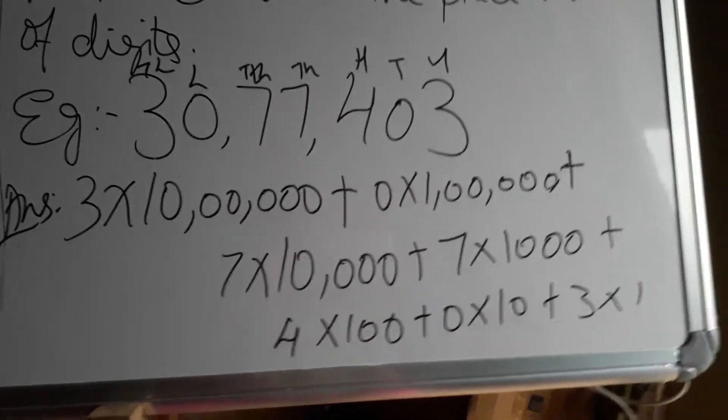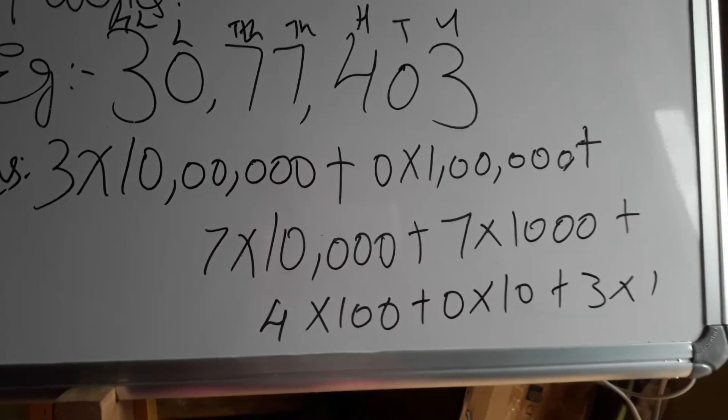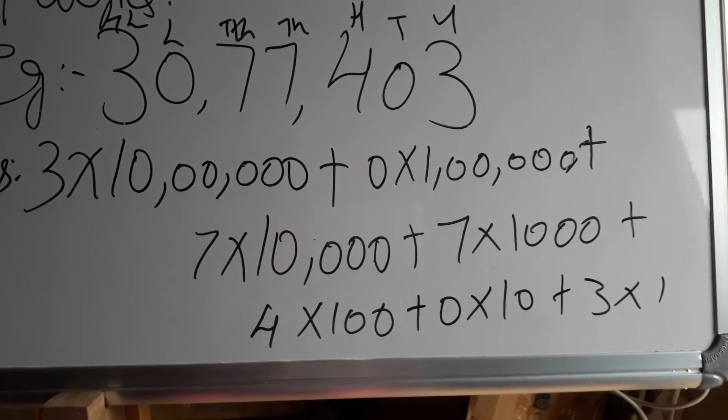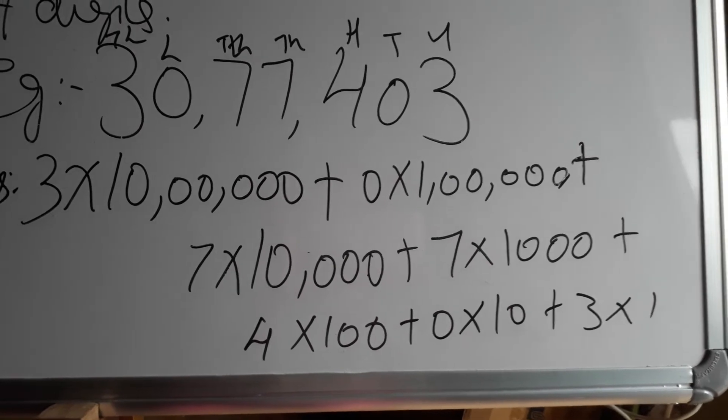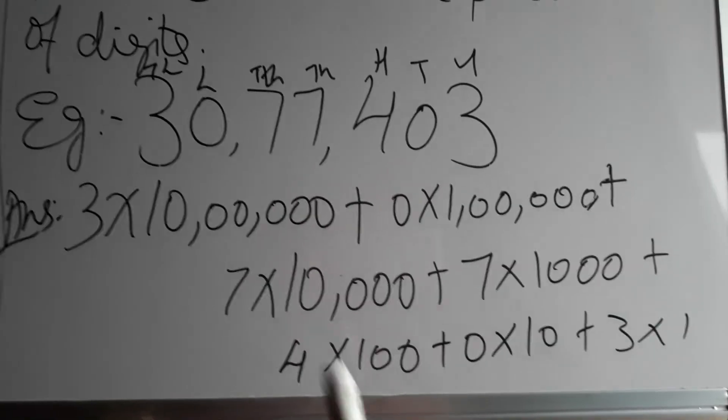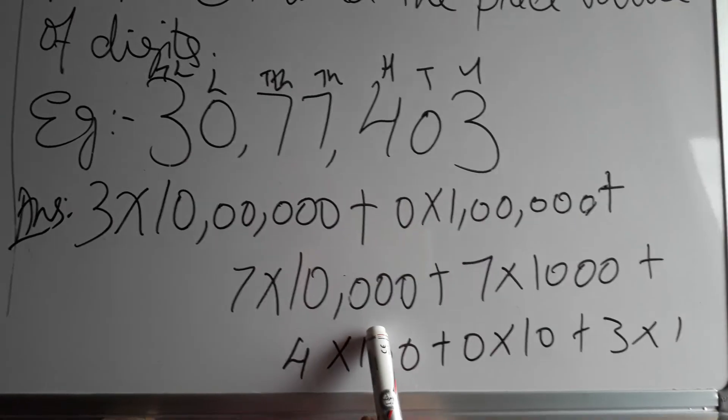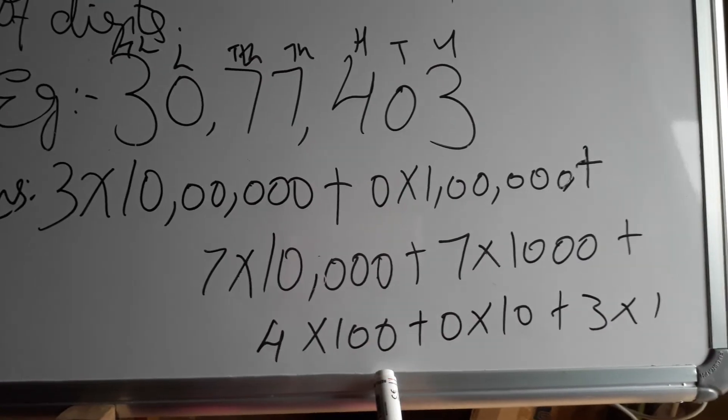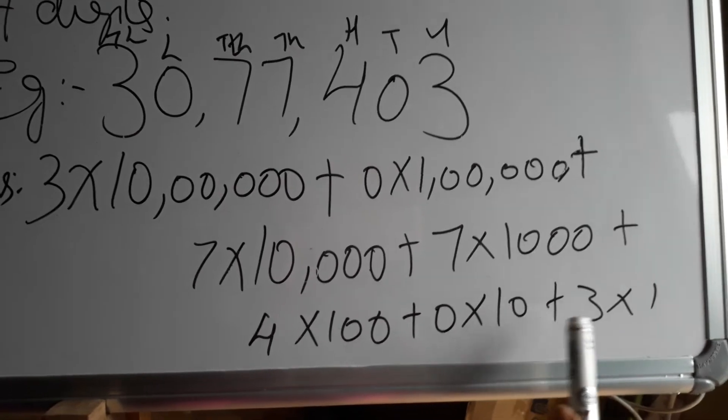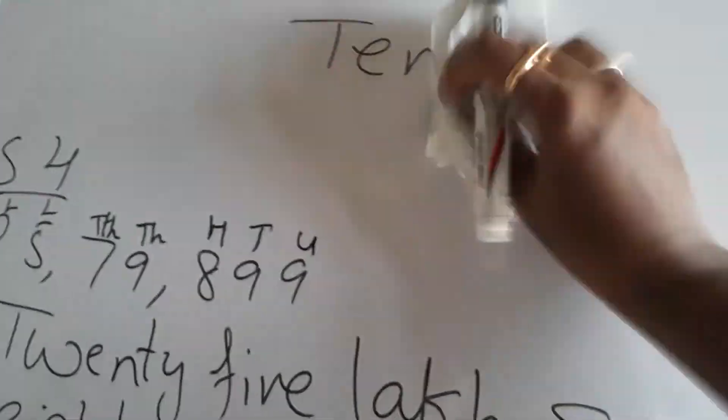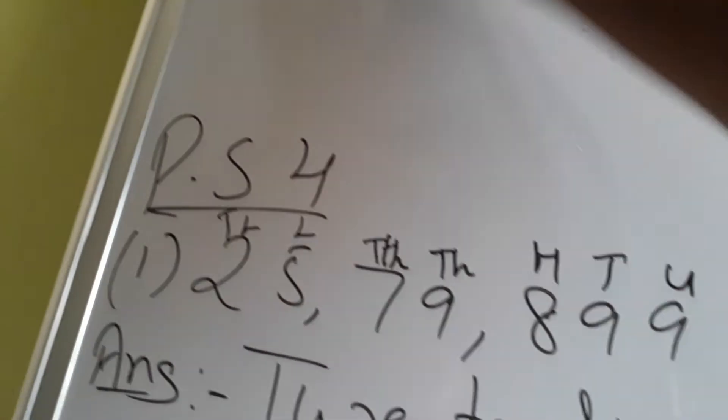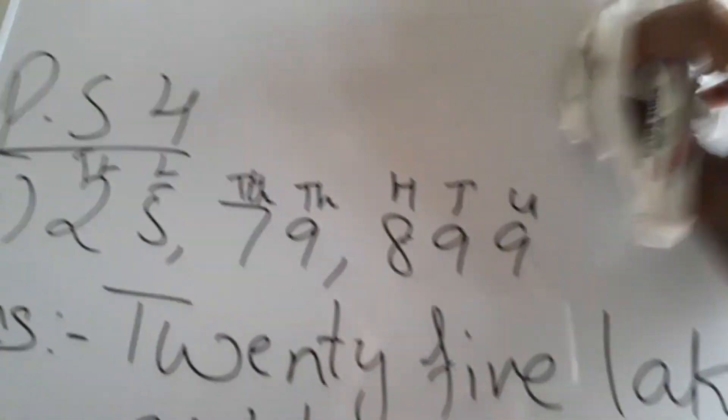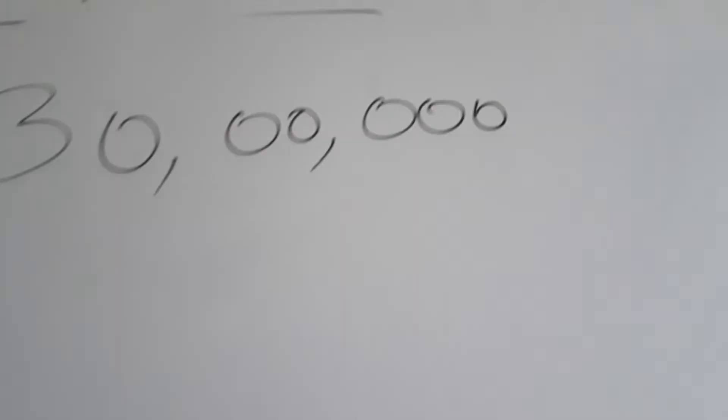Sorry, there's actually no provision of putting a stand though I have a stand. Zero into one lakh, done. Plus seven into ten thousand. Plus seven into thousand. How? You see units, tens, hundred, thousand, ten thousand, lakh, ten lakh - then you know who is where. Now four is in which place? Plus four into hundred. Plus zero into ten. Plus three into one.